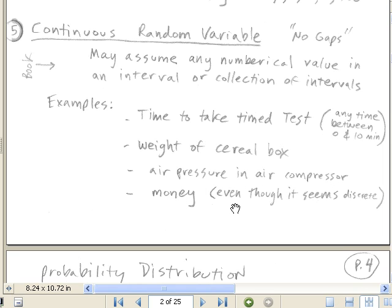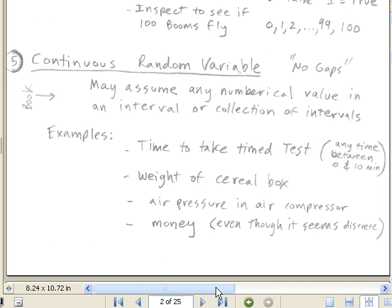Also, money is a continuous random variable. I usually think of it as discrete because we have pennies, but really you can have partial pennies or even partial partial penny in some situation. So money is going to be considered a continuous random variable also.